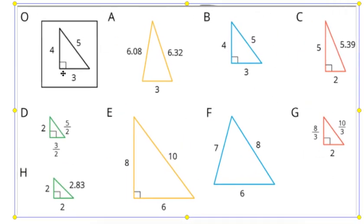We have our original, O, and then we have 1, 2, 3, 4, 5, 6, 7, 8 copies, well, potential copies. And we want to figure out if they're scale copies.